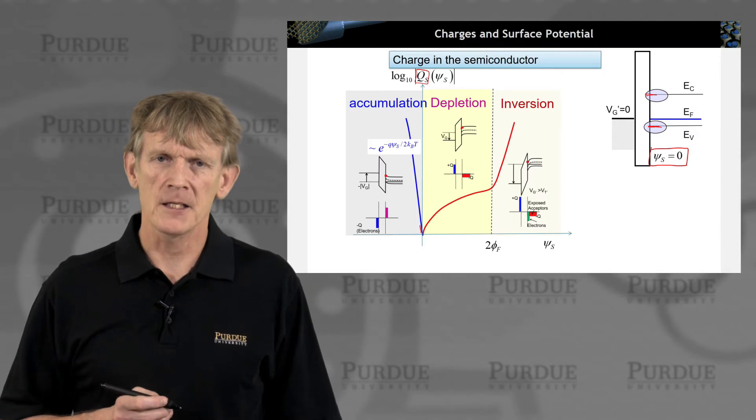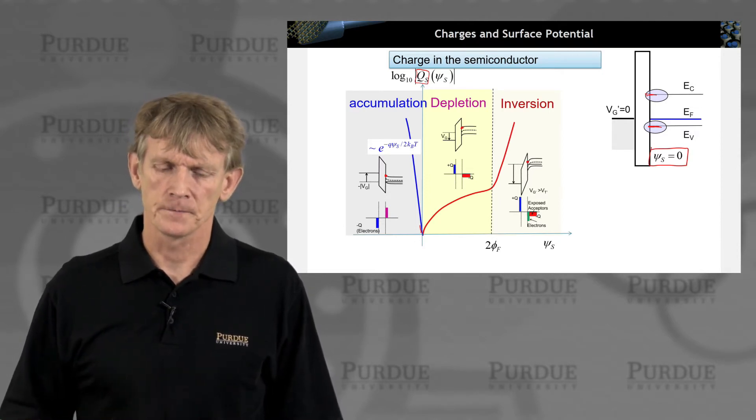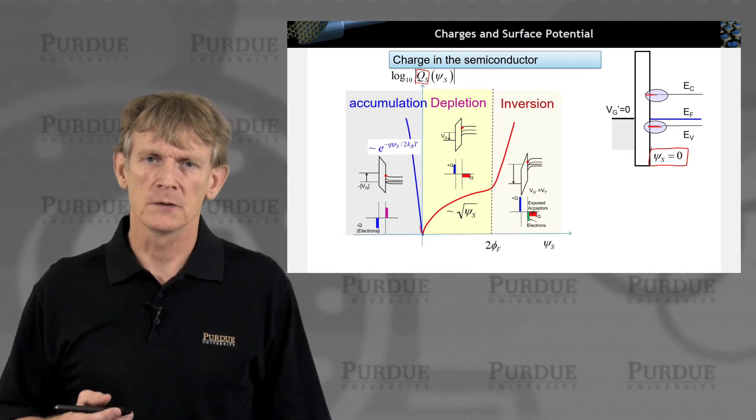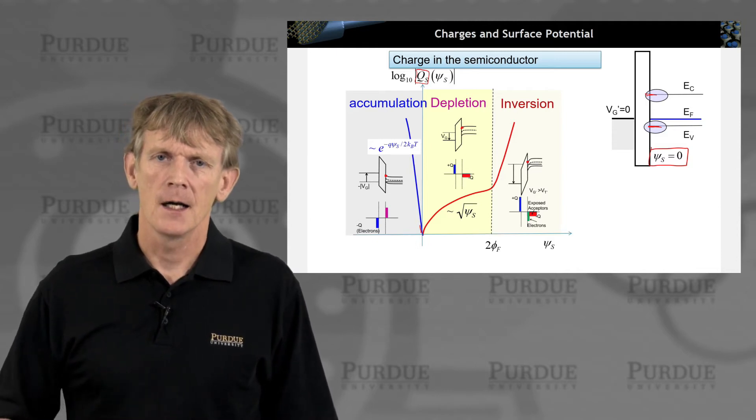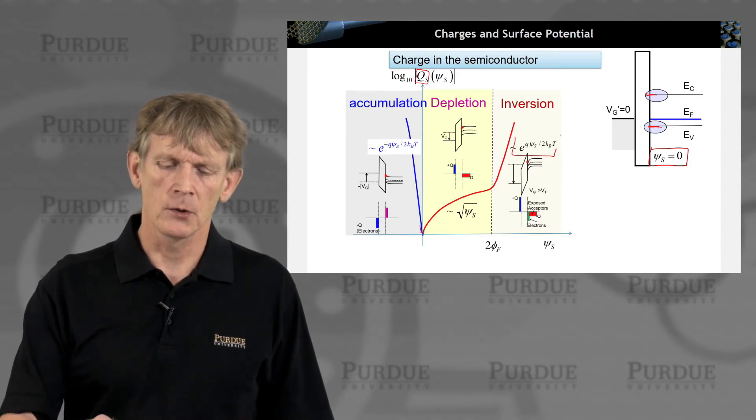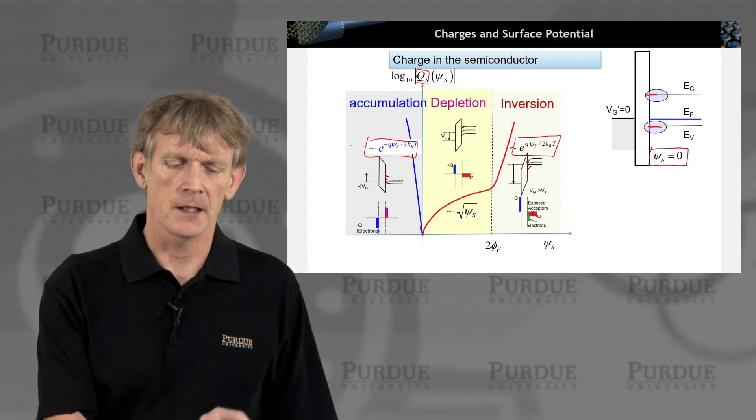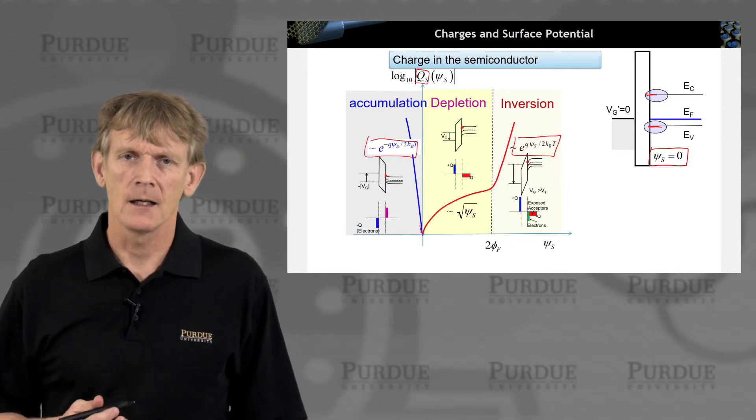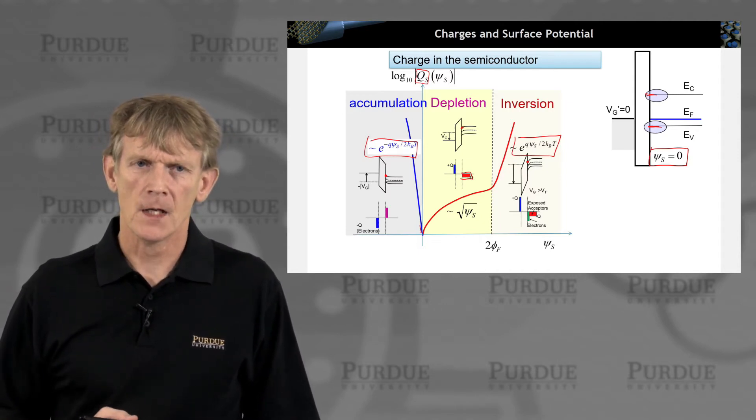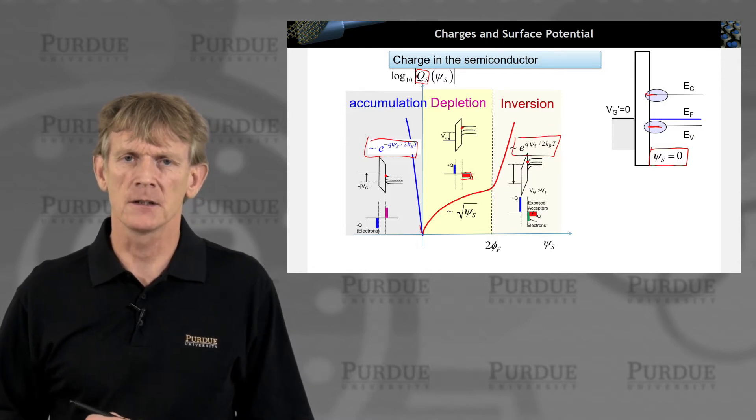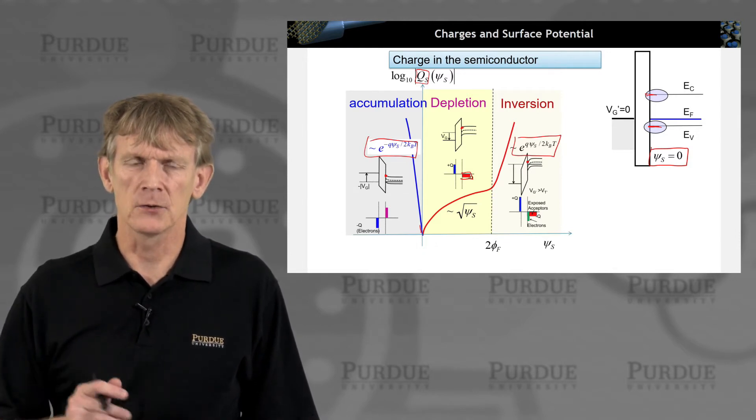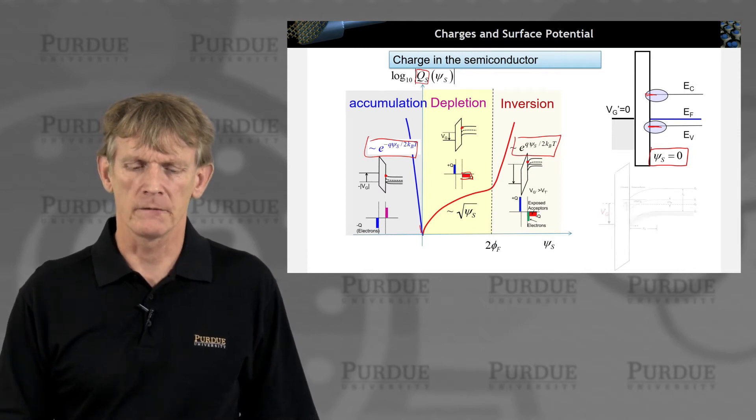Now, in depletion, inversion is slightly different. We will show later that in the region of depletion, it goes as the square root of the surface potential. And as it goes to inversion, it goes again similar to the same exponential that we had over here. So there are two different regions. One has to do that here we are just exposing the donors and have a square root dependence on the surface potential, and then we have an exponential dependence. And we'll get into details where this comes from.